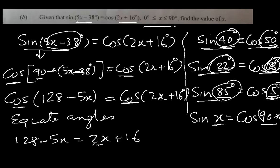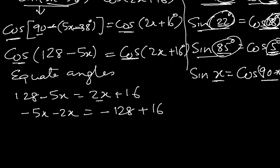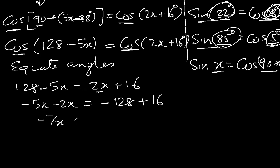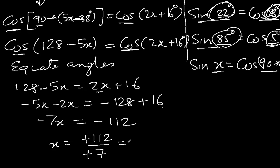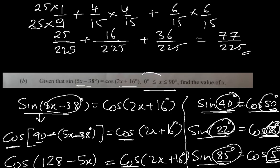Bringing the x terms together and the constants to the right side: −5x − 2x = 16 − 128, so −7x = −112. Therefore x = −112 / −7 = 16 degrees. Since 16 is between 0 and 90, that's the correct answer.